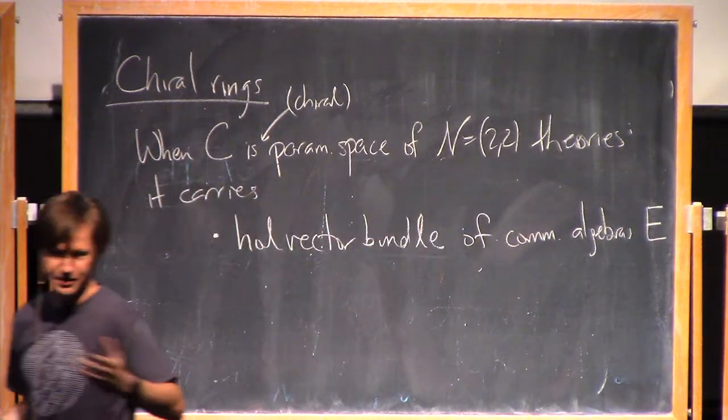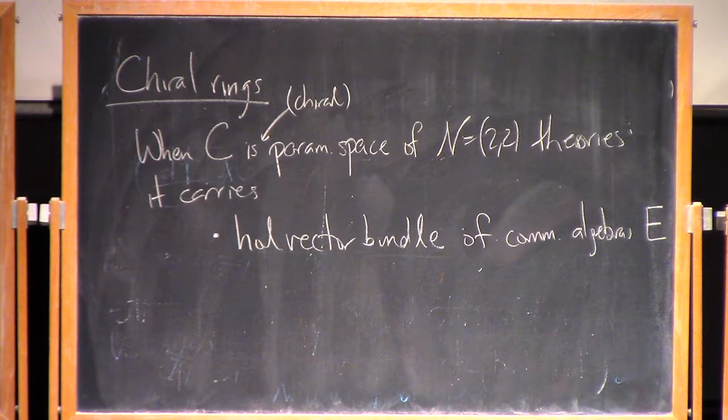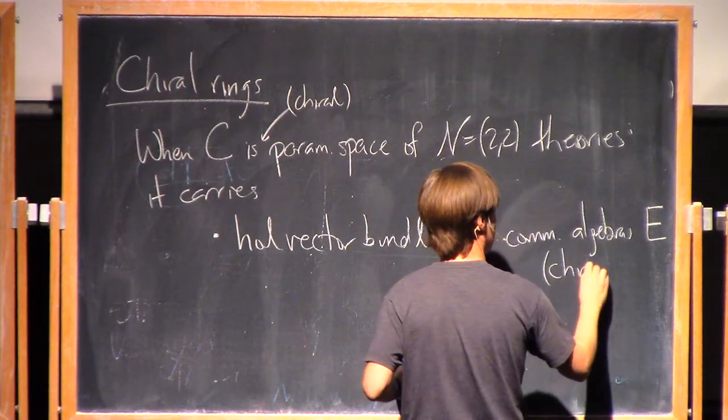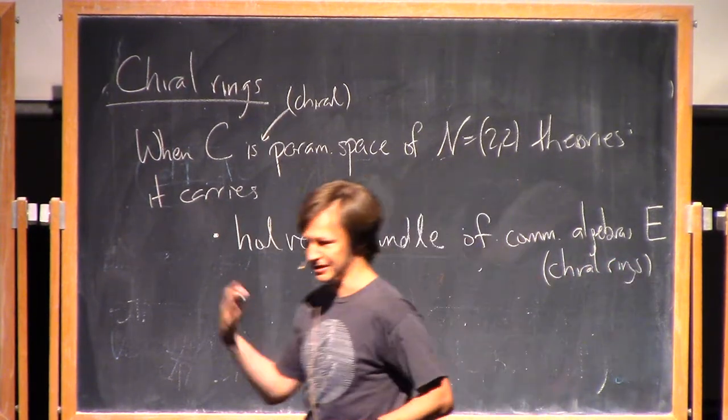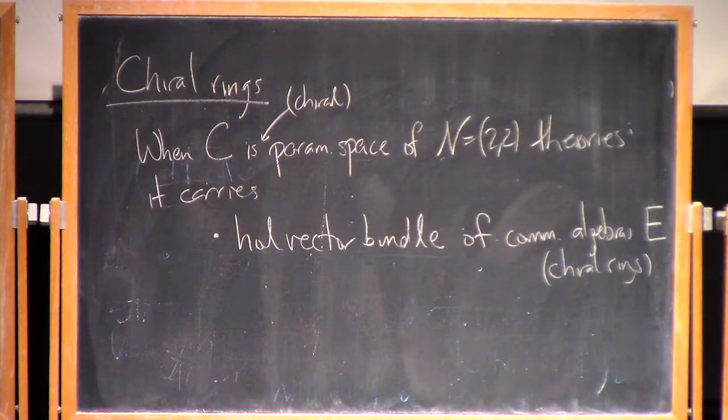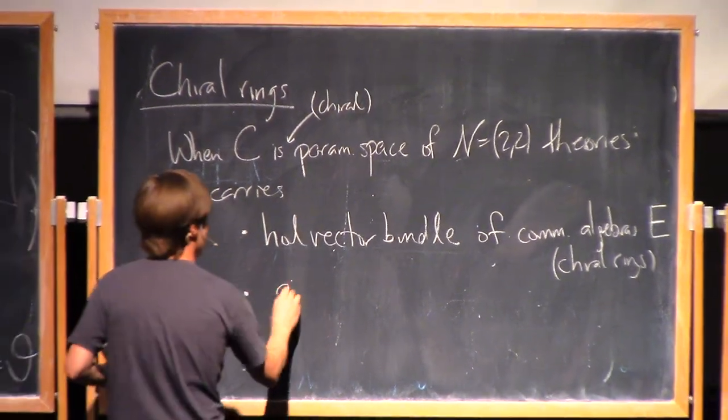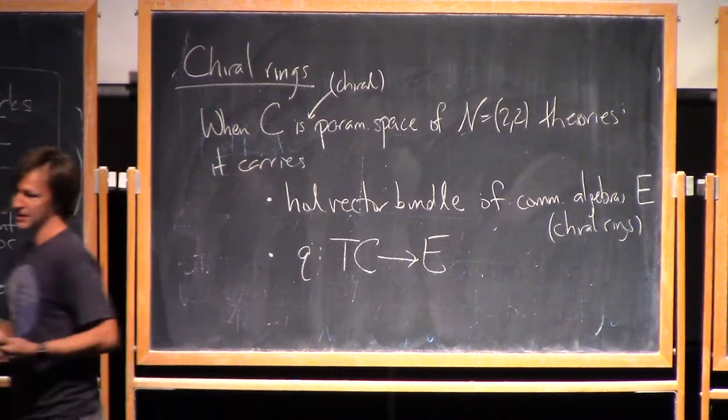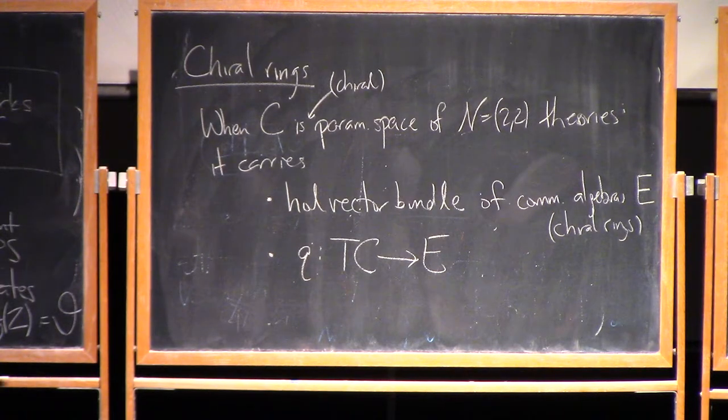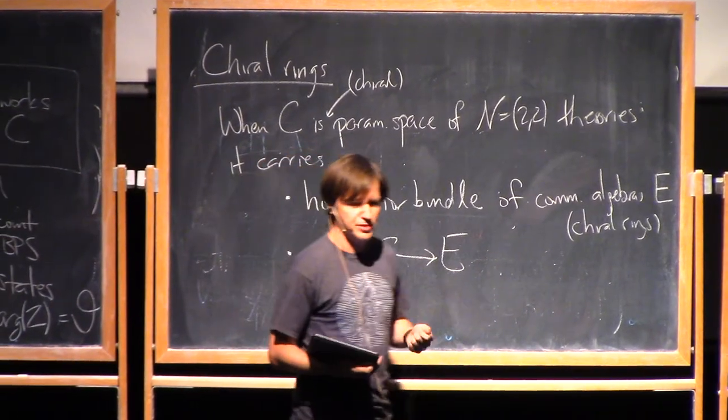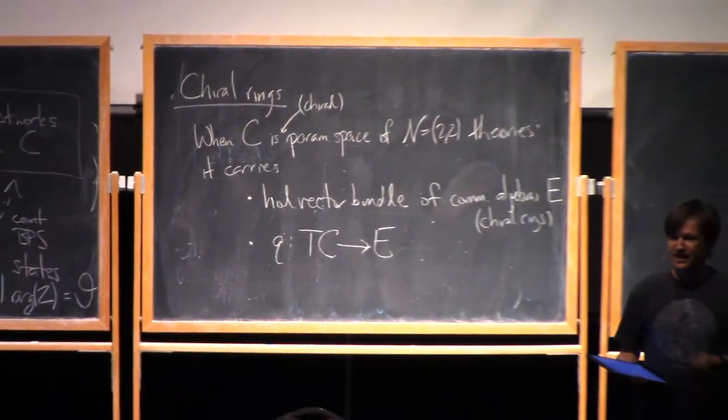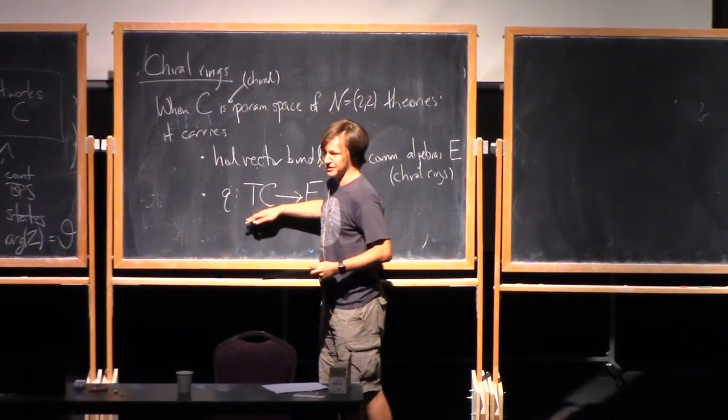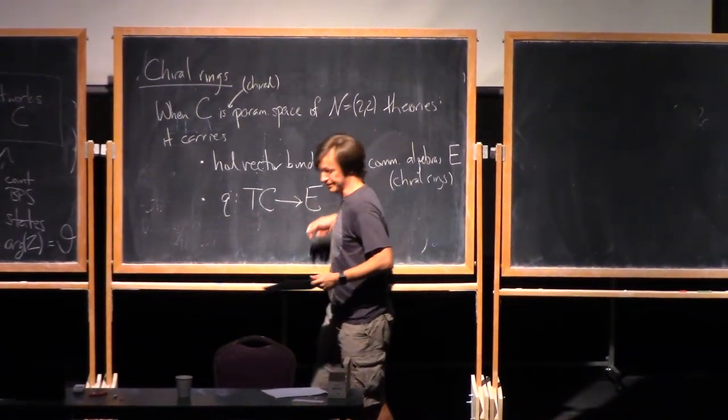So each fiber of this bundle, if you like, is a commutative algebra. Call it E. And those commutative algebras are called the chiral rings. So it has to do with the multiplication of operators in the topologically twisted version of this theory. But we won't need to know that. And the other thing it has is a map from the tangent bundle into E. So every... the way you should think about that is that the quantum field theory sort of knows its own deformations. If you want to deform it, the way you deform it is using one of the operators of the theory. And so every deformation, in other words, every tangent vector to this parameter space, corresponds to some operator of the theory, something in E.